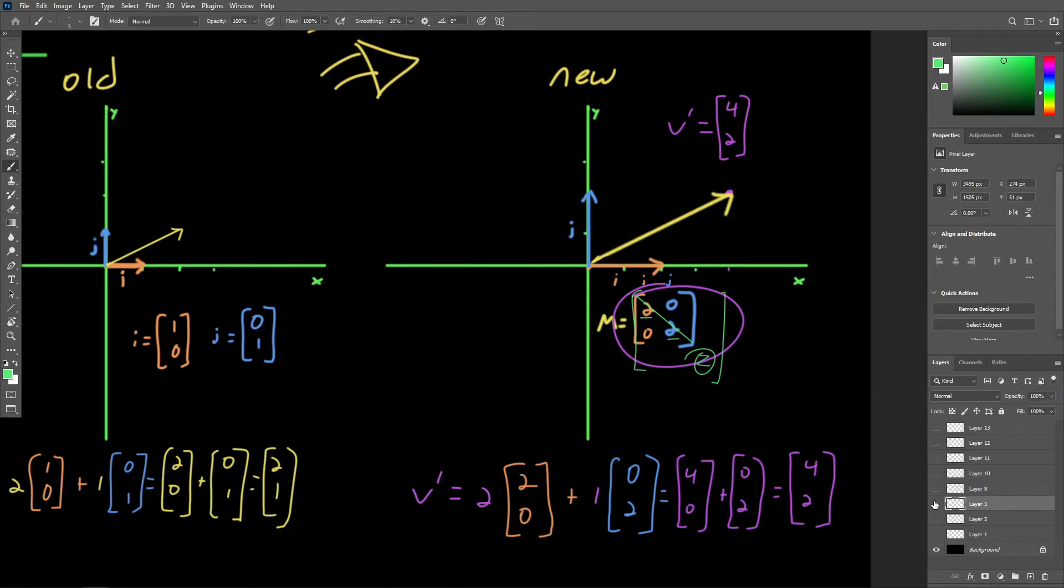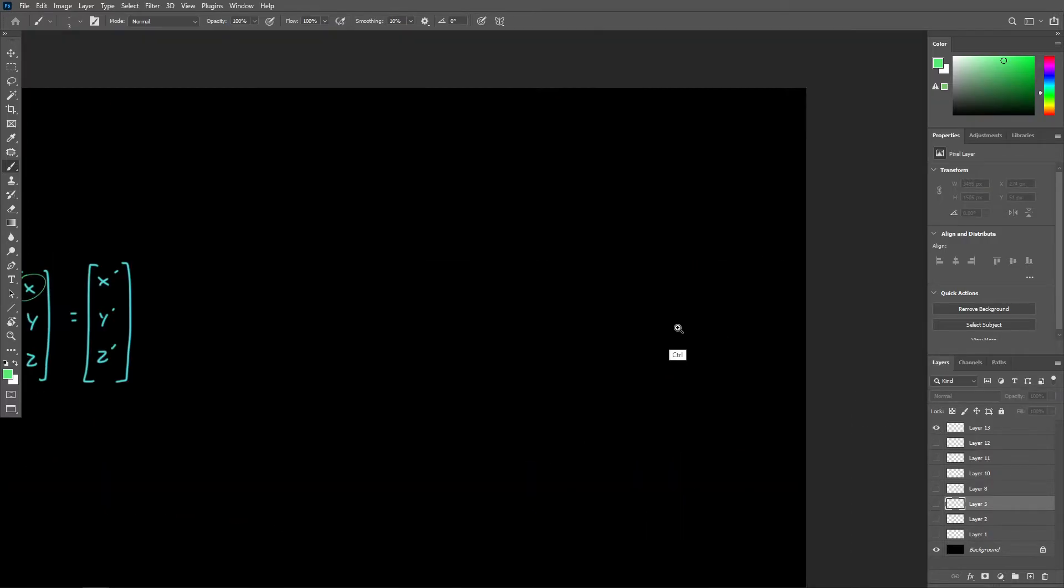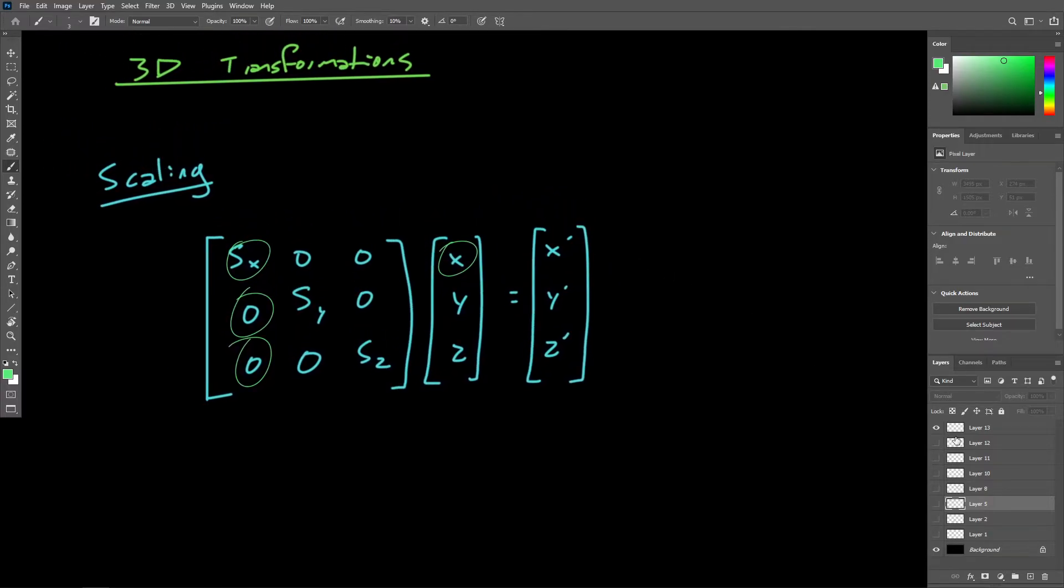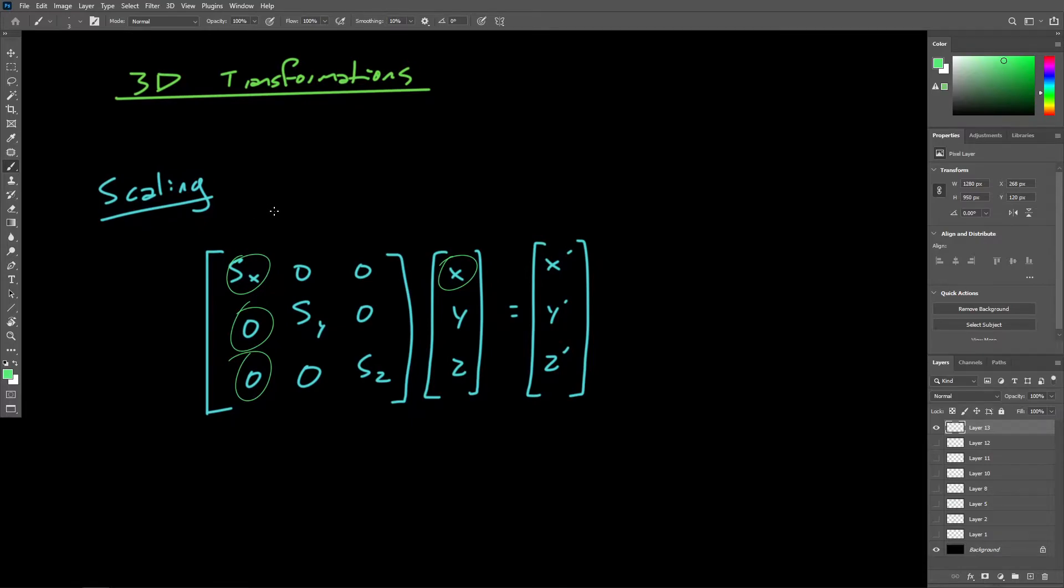So hopefully that ties together what we've been talking about so far with matrices and matrix multiplication, and that we can see here that at least when doing linear transformations with scaling and rotation, nothing has changed. We're really just accomplishing that same linear combination, just using matrix multiplication.